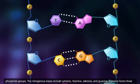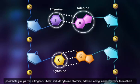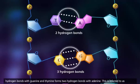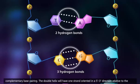The nitrogenous bases include cytosine, thymine, adenine, and guanine. Cytosine forms three hydrogen bonds with guanine, and thymine forms two hydrogen bonds with adenine. This is referred to as complementary base pairing.